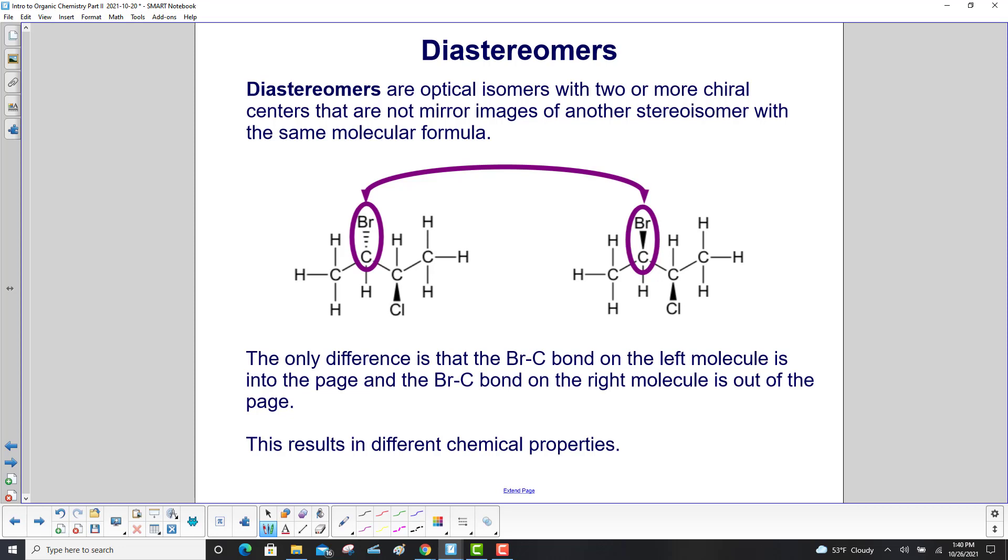Diastereomers are optical isomers with two or more chiral centers that are not mirror images of another stereoisomer with the same molecular formula. The only difference between these two molecules is that the bromine carbon bond right over here on the left molecule is into the page and the bromine carbon bond on the right molecule is out of the page. This results in different chemical properties.